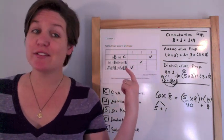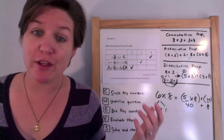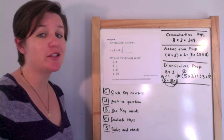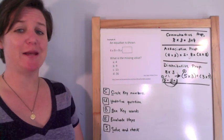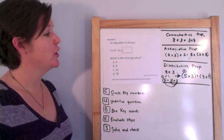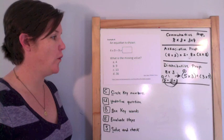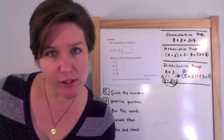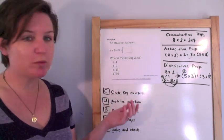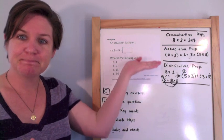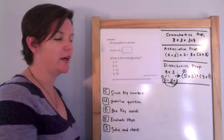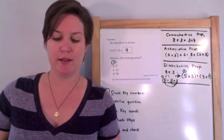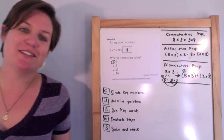Don't write anything else on here unless it is a checkmark for the answer that you think. Okay, this next one — an equation is shown: 4 times 9 equals 9 times what? What is the missing value? It's very easy. Which property do you think this is representing? The commutative property. 4 times 9 equals 9 times 4. That was so easy it wasn't even fun.